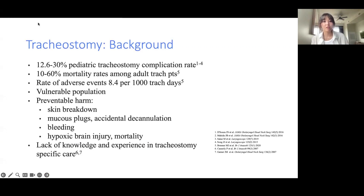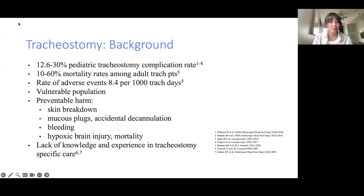To begin with some background: there is a pretty high pediatric tracheostomy complication rate, cited in the literature at 12.6 to 30 percent. Similarly, in adult tracheostomy patients there is about a 10 to 60 percent mortality rate, with an adverse event rate of about 8.4 per 1,000 trach days. Patients with tracheostomies are a vulnerable population. Preventable harms include skin breakdown, mucus plugging, accidental decannulation, bleeding from the tracheostoma and trachea, as well as hypoxic brain injury and mortality. Lack of knowledge and experience in tracheostomy-specific care definitely contributes to high morbidity and mortality.